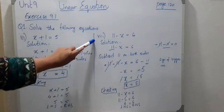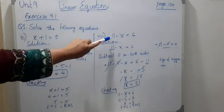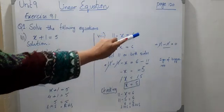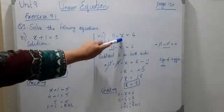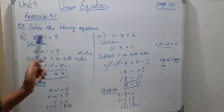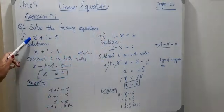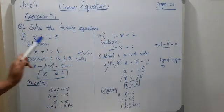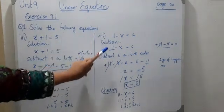Question 1, part 8: 11 minus x equals 6. The variable is the same but the position is changed — the number comes first. The method is: 11 minus 11 equals 0, so we subtract 11 on both sides.